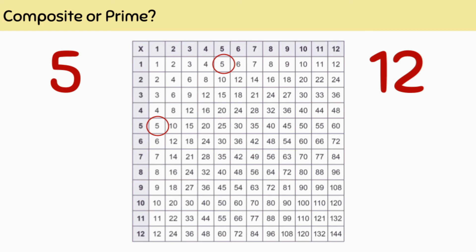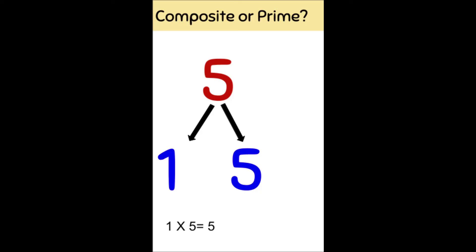I can only make five groups of one or one group of five. Therefore, this shows again that five is a prime number. Its only factors are one and five.